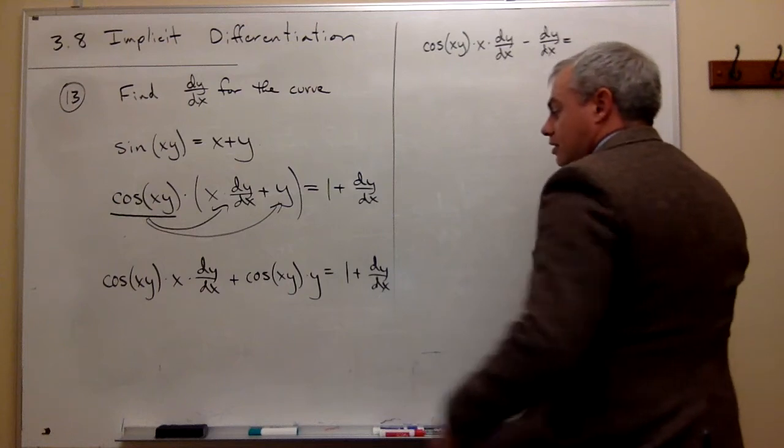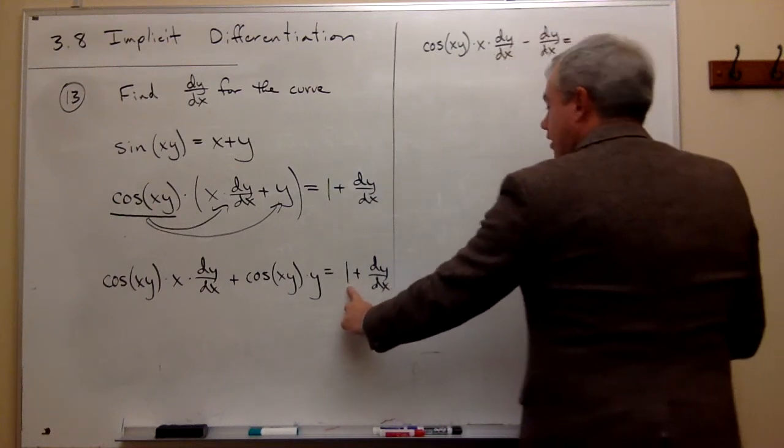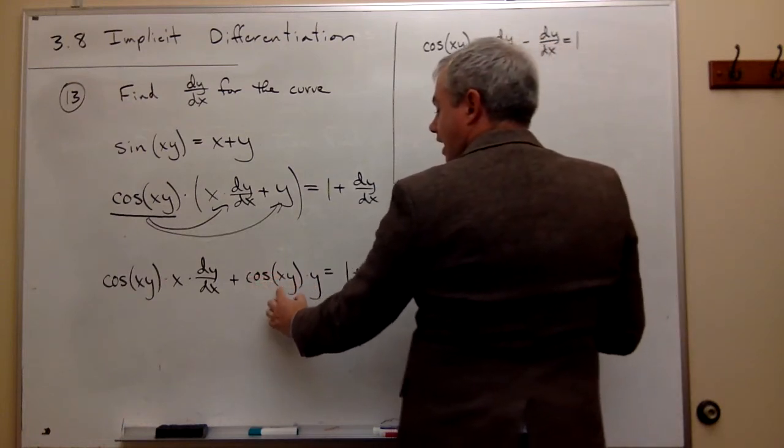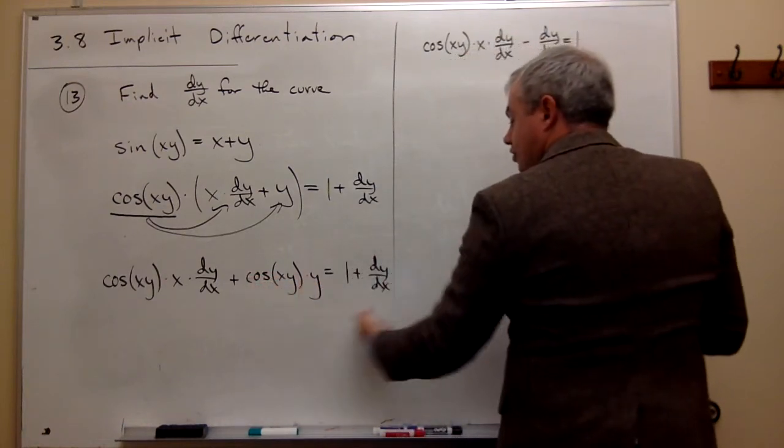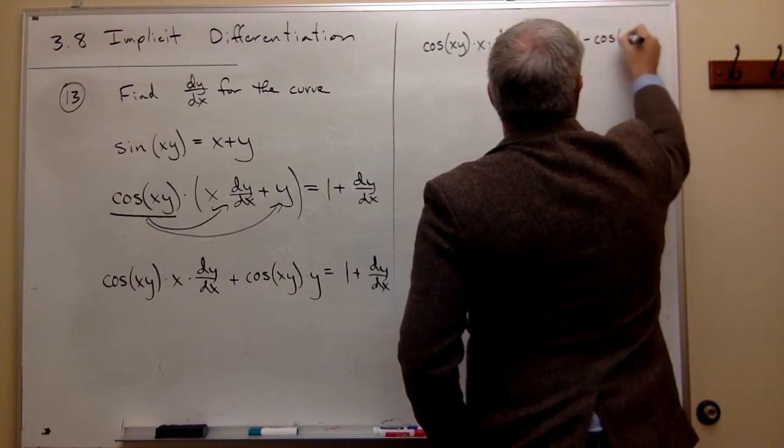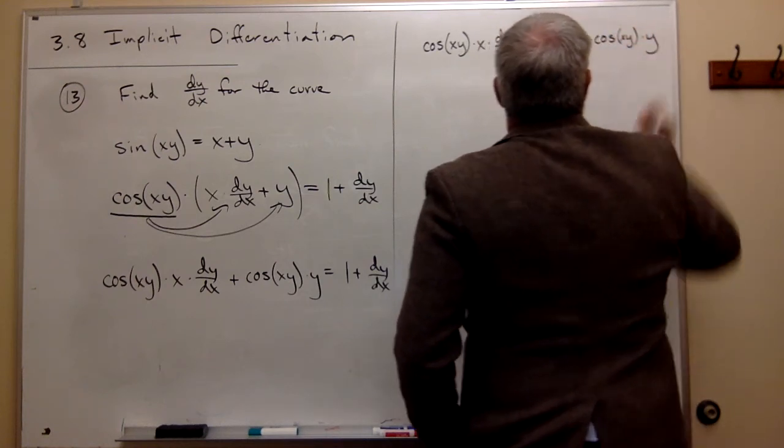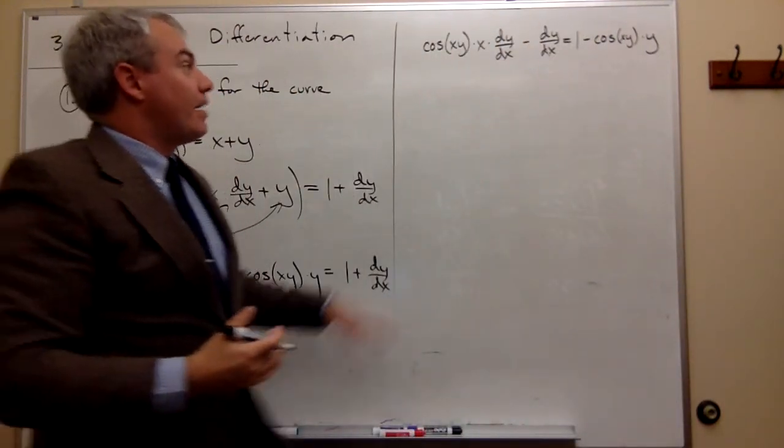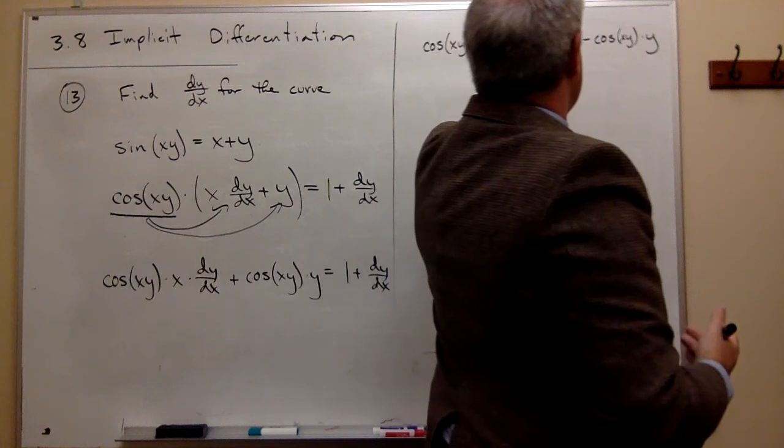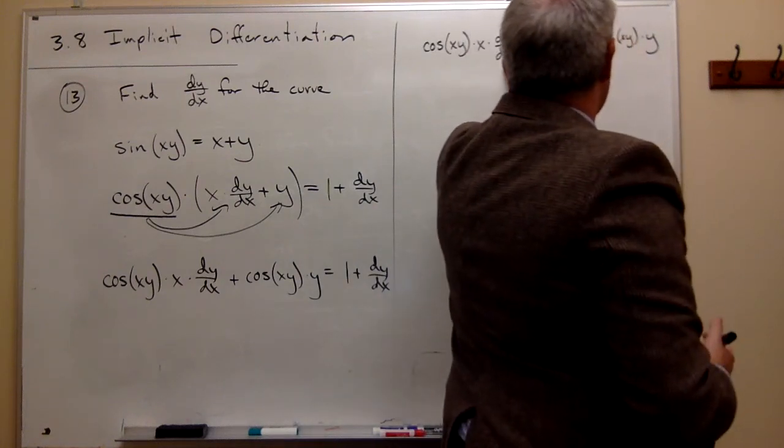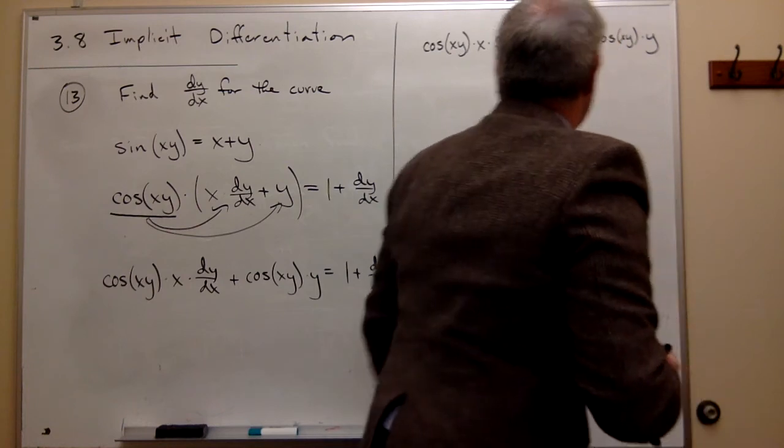And that equals—I have a 1 that's already sitting on the right side, I'll leave it there, and then I need to move this cos(xy) times y to the other side as a minus cos(xy) times y. Now everything's ready to go, and everything on this side of the equation has a dy/dx, everything on this side doesn't. So what I want to do is let's factor out the dy/dx on this side.